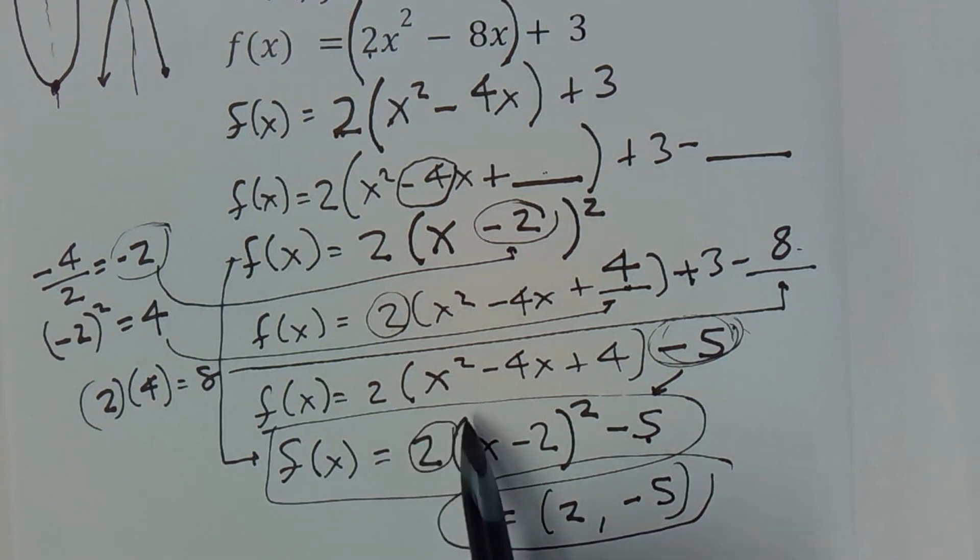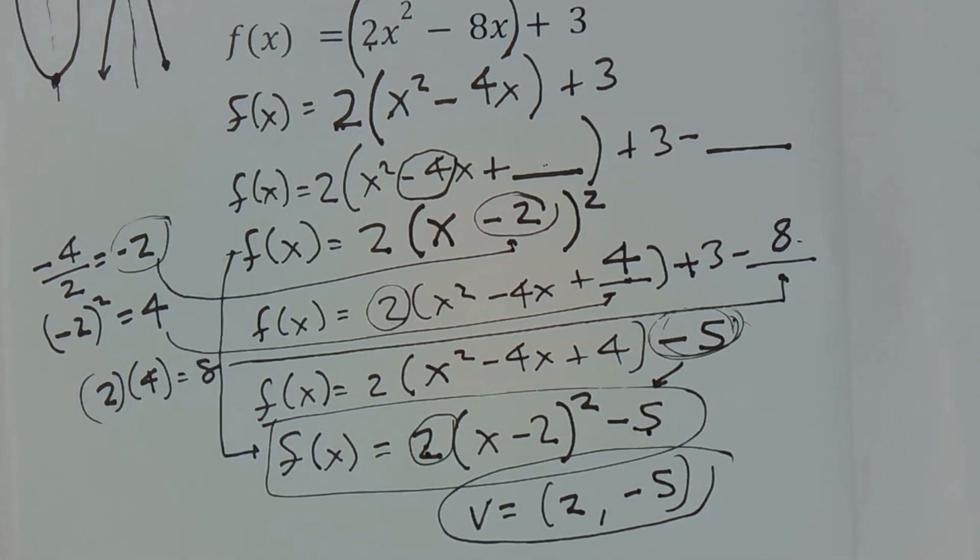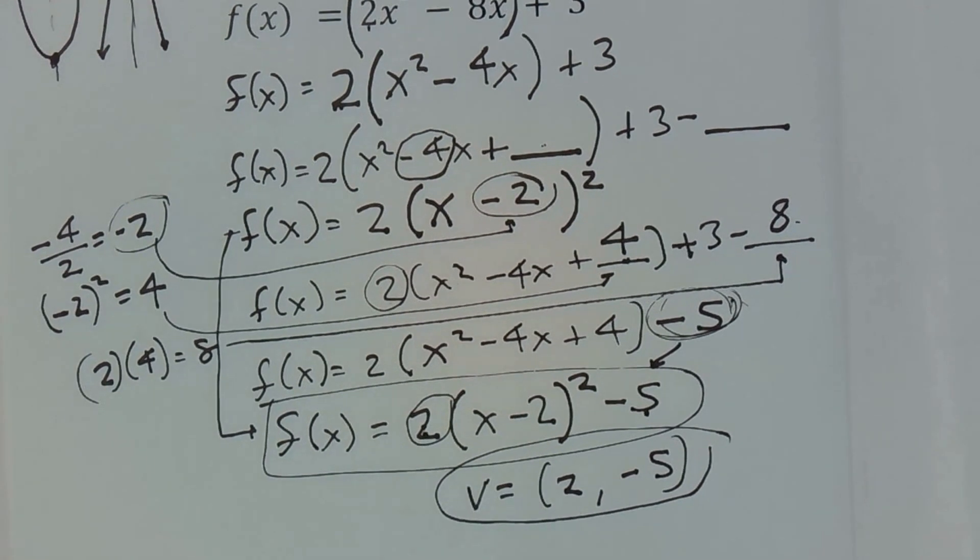This term here will show you whether it opens up or down. In this case because it is a positive it is opening up. You've now properly found the vertex of a parabola.